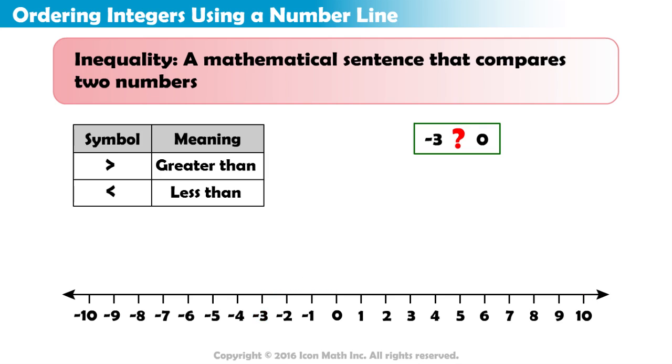When comparing numbers using a number line, we must remember that a number line is always in order from least to greatest. The further to the left we go, the smaller the numbers get. The further to the right, the larger they become.